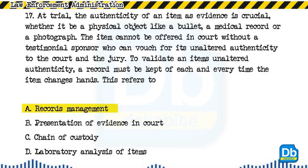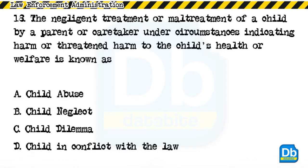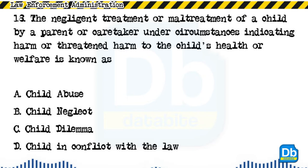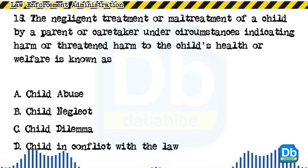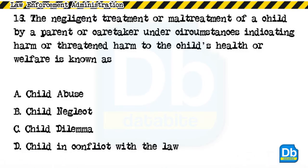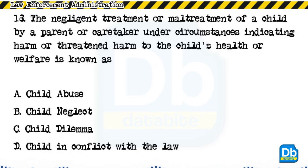Question 18: The negligent treatment or maltreatment of a child by a parent or caretaker under circumstances indicating harm or threatened harm to the child's health or welfare is known as: a) child abuse, b) child neglect, c) child dilemma, d) child in conflict with the law. The answer is C, child dilemma.